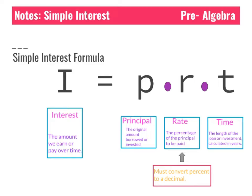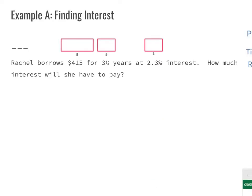Let's take a look at Example A. It says: find the interest. Rachel borrows $415 for three and a half years at a 2.3% interest rate. How much interest will she have to pay? The first thing we need to do is use our formula I = P × R × T and figure out which values we have and which variable we're looking for.